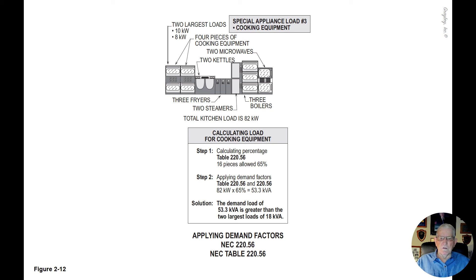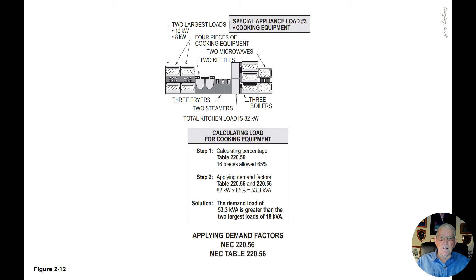This illustration deals with applying demand factors for cooking equipment in commercial or industrial locations in accordance with NEC 220.56 and Table 220.56. Notice that we used Section 220.55 and Table 220.55 along with its notes for residential. But since these types of cooking equipment may be in a restaurant, we would use Table 220.56 to determine the VA for these loads after a demand factor has been applied.